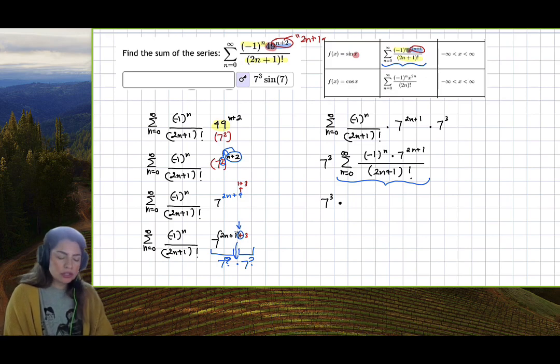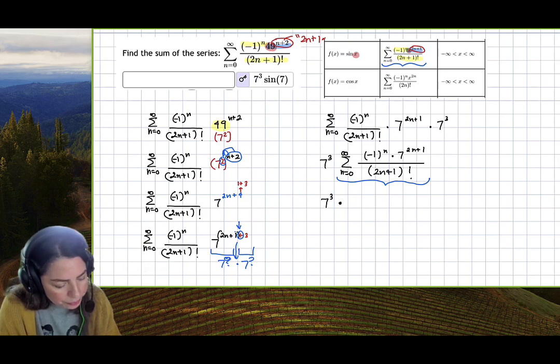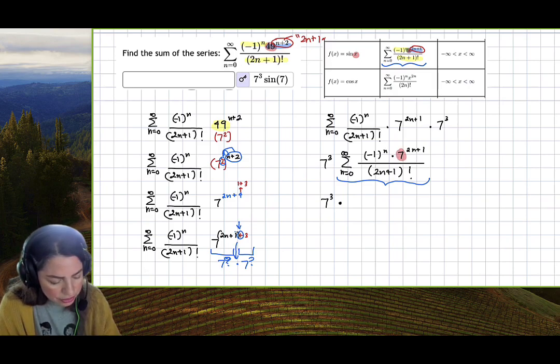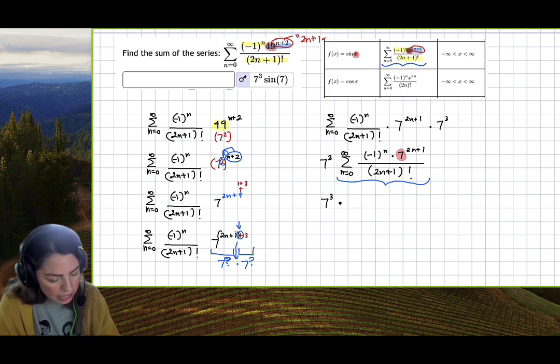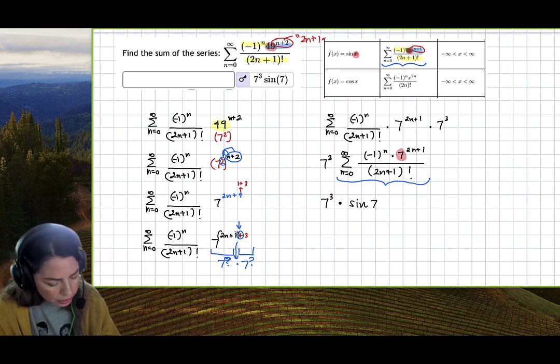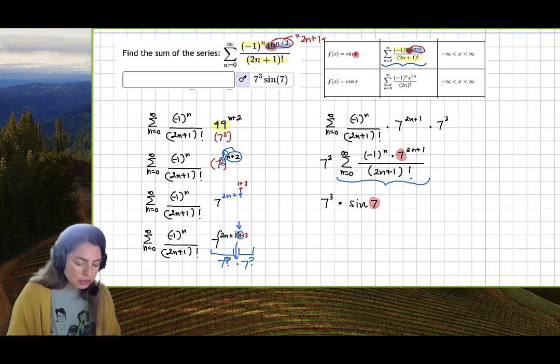Now what I have is this big thing, which is exactly what the function sine x is in a Taylor series representation, where the base x here is 7. I can rewrite this entirely as this function here, but our x now is 7. So 7 cubed times sine, and then the x, which is 7. That 7 comes directly from that base. Just like that.